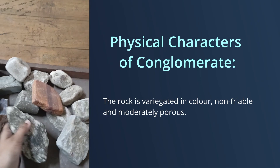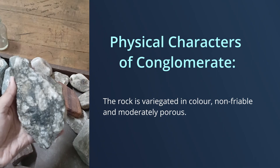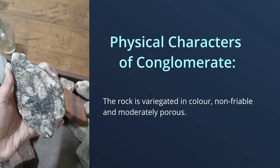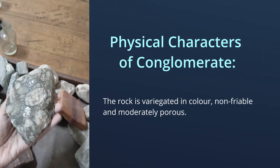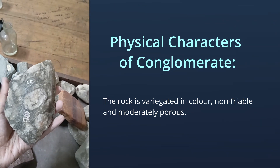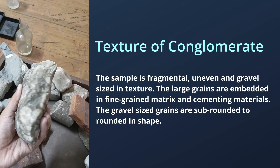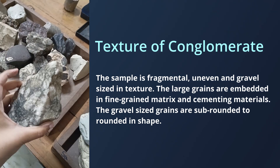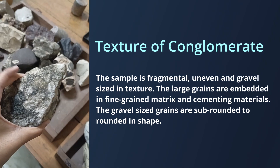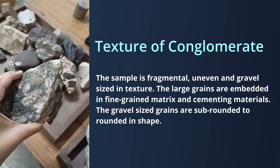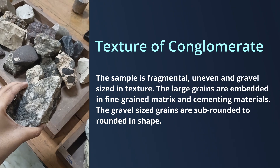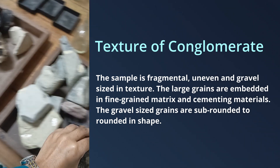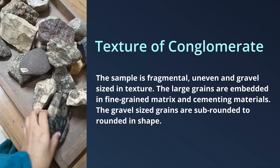In summary, the conglomerate rock is variegated in color, non-friable, and moderately porous. The texture of the sample is fragmental, uneven, and gravel sized. The larger grains are embedded in a fine grained matrix and cementing materials.